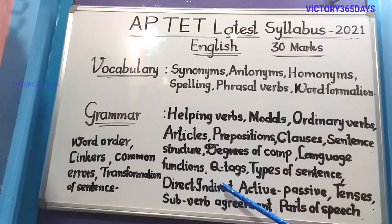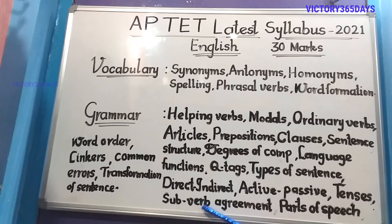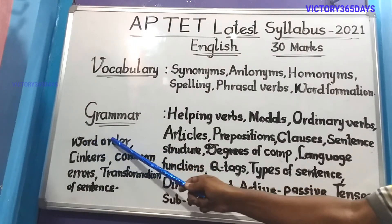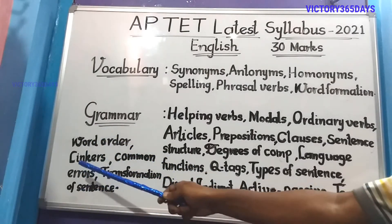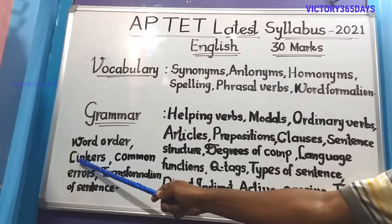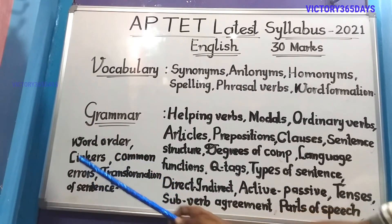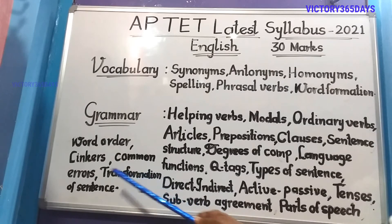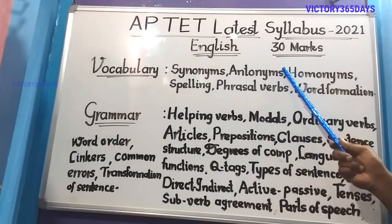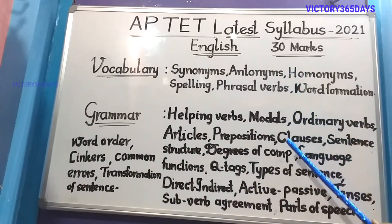Continuing in grammar: direct and indirect speech, active and passive voice, tenses, subject-verb agreement, parts of speech, word order, linkers (which are nothing but conjunctions), common errors, and finally transformation of sentences. These two sections — vocabulary and grammar — make up the AP TET 2021 syllabus.